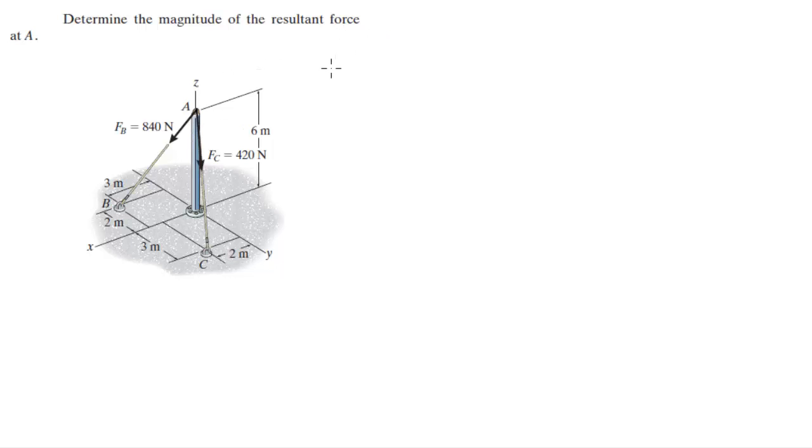A sits at zero I plus zero J plus six K. B sits at three I minus two J plus zero K. C sits at two I plus three J plus zero K.